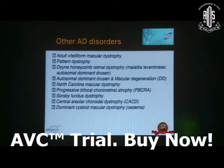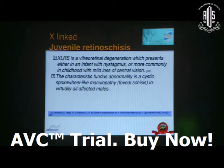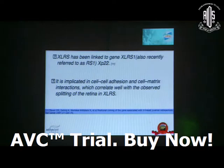Other autosomal dominant disorders include adult vitelliform macular dystrophy, pattern dystrophy, Doyne honeycomb retinal dystrophy, autosomal dominant drusen and macular degeneration, North Carolina macular dystrophy, progressive bifocal choroidal atrophy, Sorsby fundus dystrophy, central areolar choroidal dystrophy, and dominant cystoid macular dystrophy. X-linked juvenile retinoschisis is a vitreoretinal degeneration presenting either in infants with nystagmus or more commonly in childhood with mild loss of central vision. The characteristic fundus abnormality is a cystic spokewheel-like maculopathy — foveal schisis — in virtually all affected males. Prognosis is good as long as retinal detachment or vitreous hemorrhage does not occur. XLRS has been linked to gene XLRS1, also recently referred to as RS1, implicated in cell-to-cell adhesion and cell-to-matrix interaction, correlating with the observed splitting of the retina in XLRS.